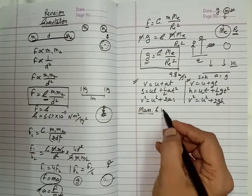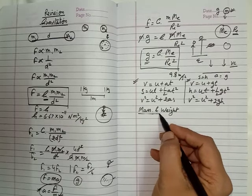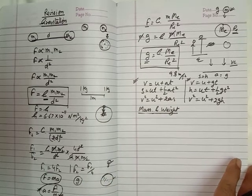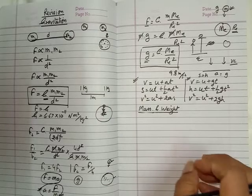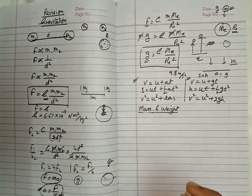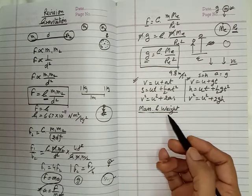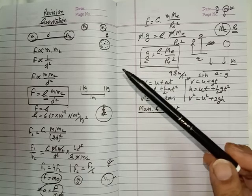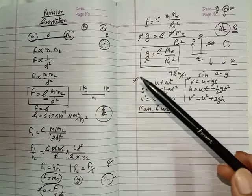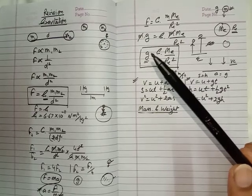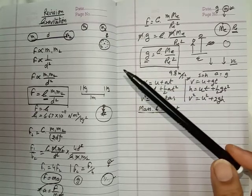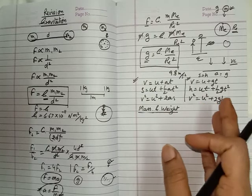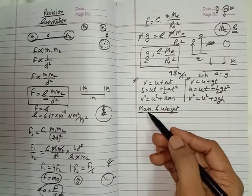The next topic is mass and weight. Mass is the actual quantity of matter that is present in the object - what is the quantity of matter present in this object is called the mass. Mass does not change. If we are anywhere in the universe - even on the earth, even on the moon or anywhere else - the mass does not change. It always remains constant everywhere.